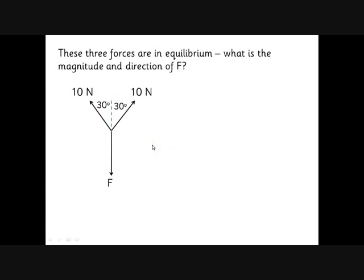So here's an example. We've got a force down, which we don't know. We've got two forces upwards. These are 10 newtons each, and they're both at 30 degrees to this line down the middle. It's a vertical line, so it's a symmetrical system.